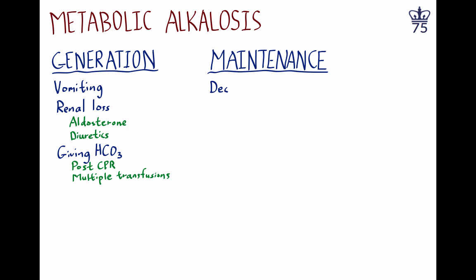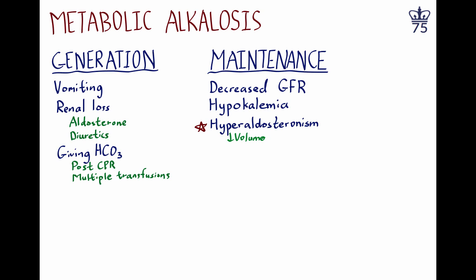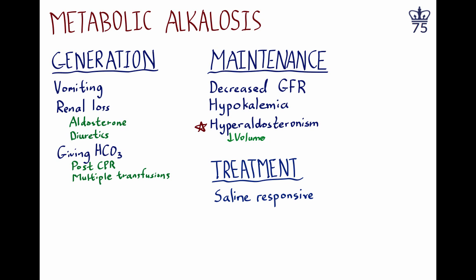Why do the kidneys behave the way they do in a patient with alkalosis? The most important reason is hyperaldosteronism. When someone is volume depleted — by far the commonest situation where you get persistent metabolic alkalosis — aldosterone levels go up, you absorb sodium, and you get rid of hydrogen. You're left with this excess bicarbonate on the blood side, which will never improve unless you remove the factors leading to the elevated aldosterone level.